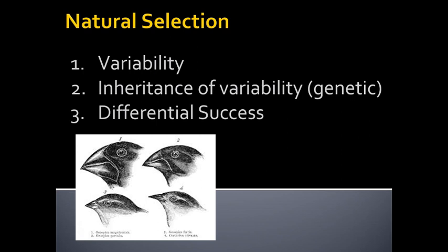Number two, some of that variability needs to be inherited. It doesn't need to be 100%, but some of it needs to be inherited, meaning it has a genetic component. The more a trait is inherited, the more of a genetic component there is for a specific trait, the more it can be impacted by natural selection. But it doesn't have to be 100%. If there's any genetic component at all, natural selection can work on it.